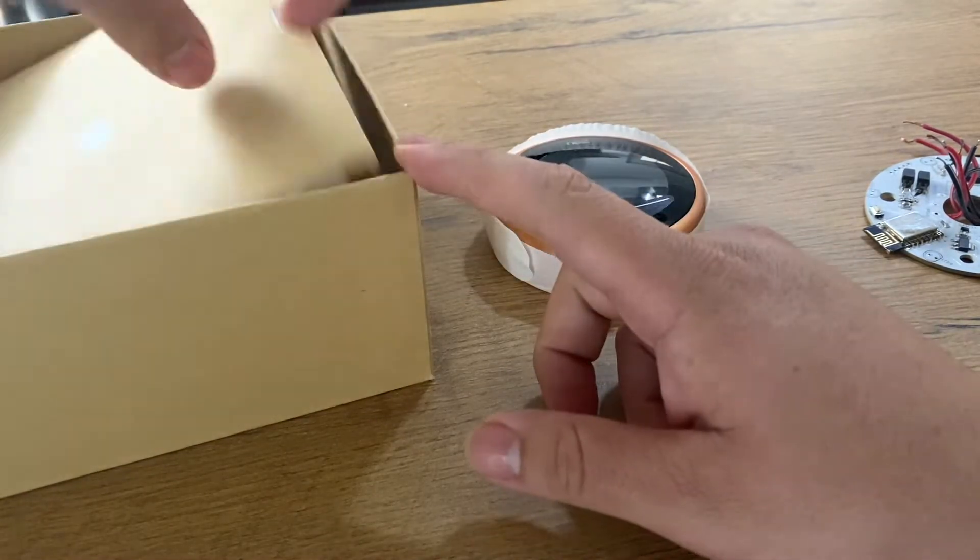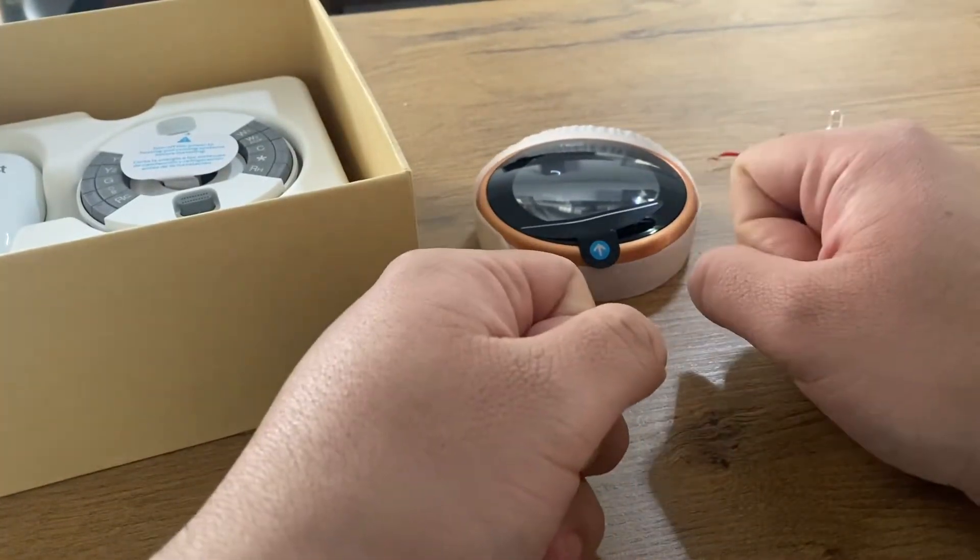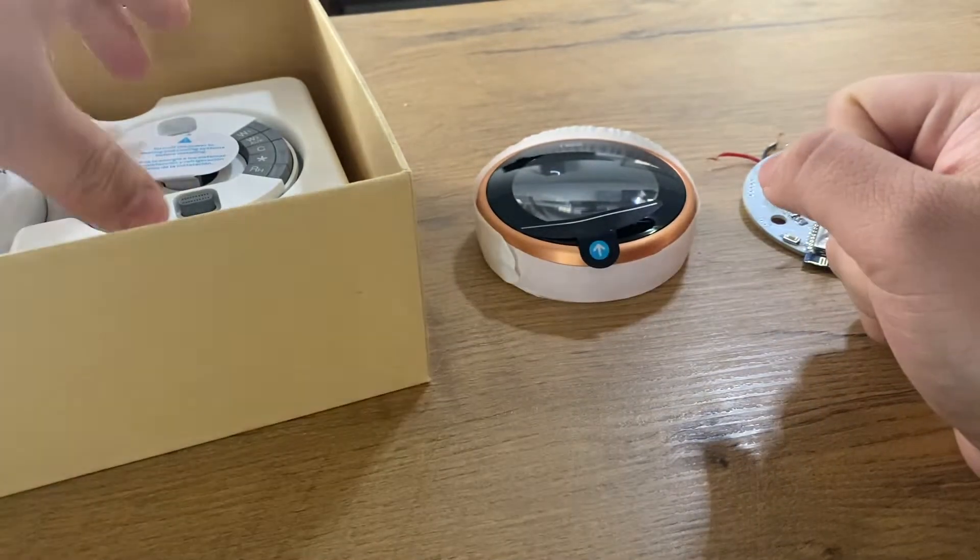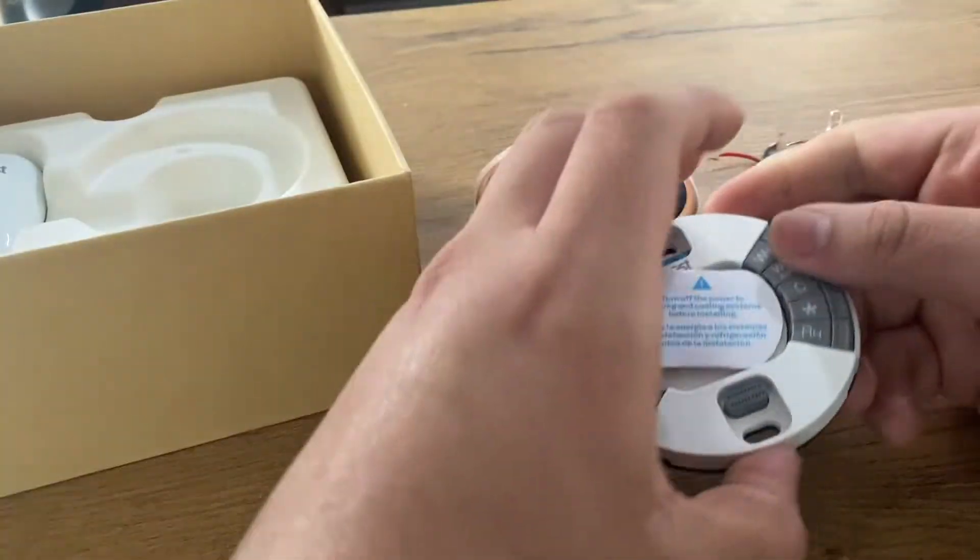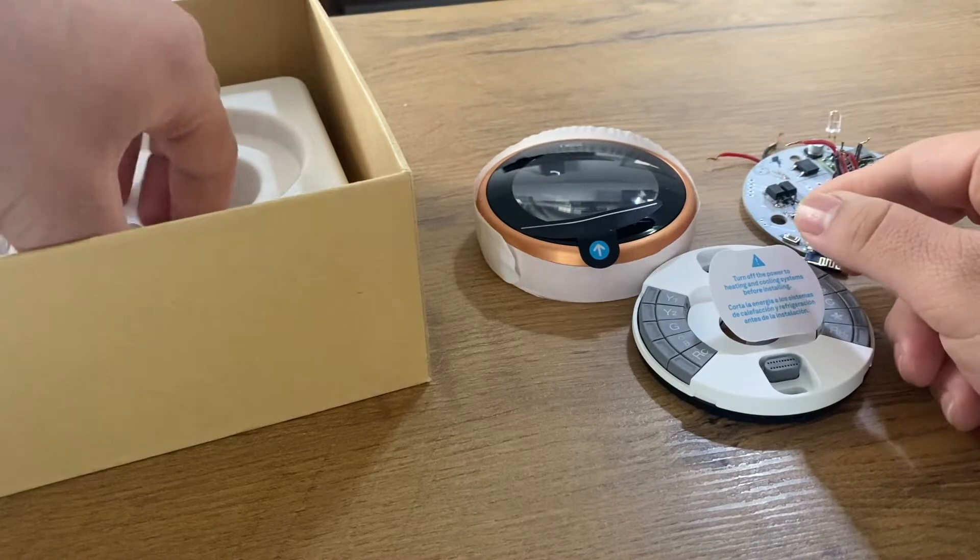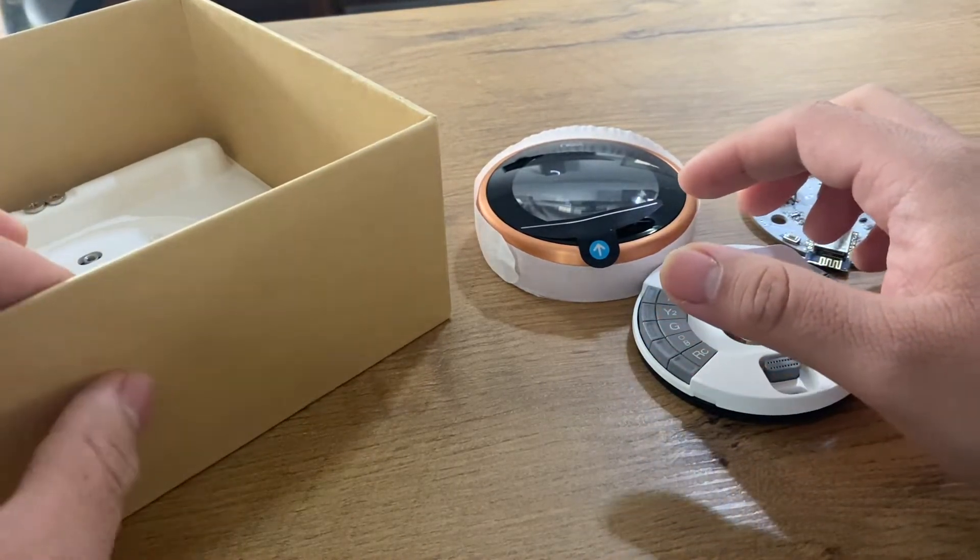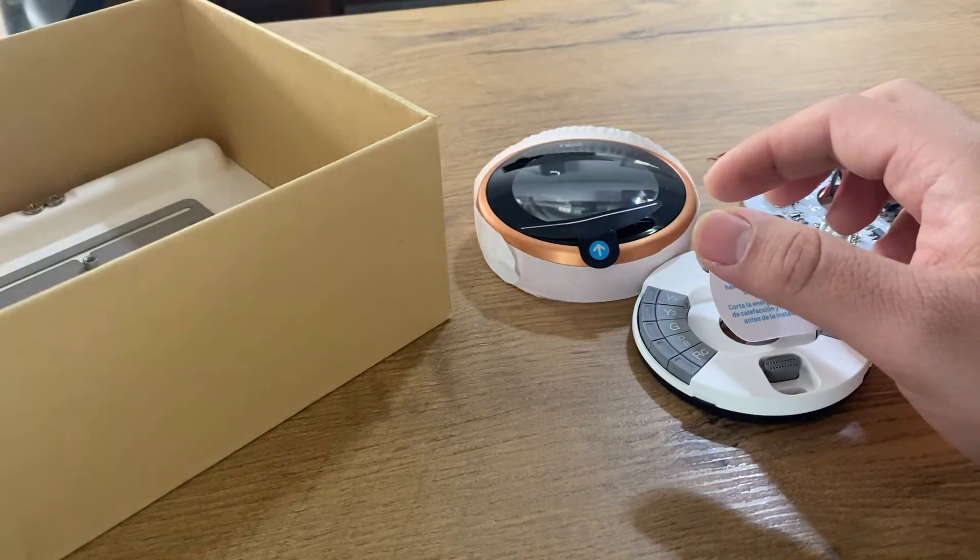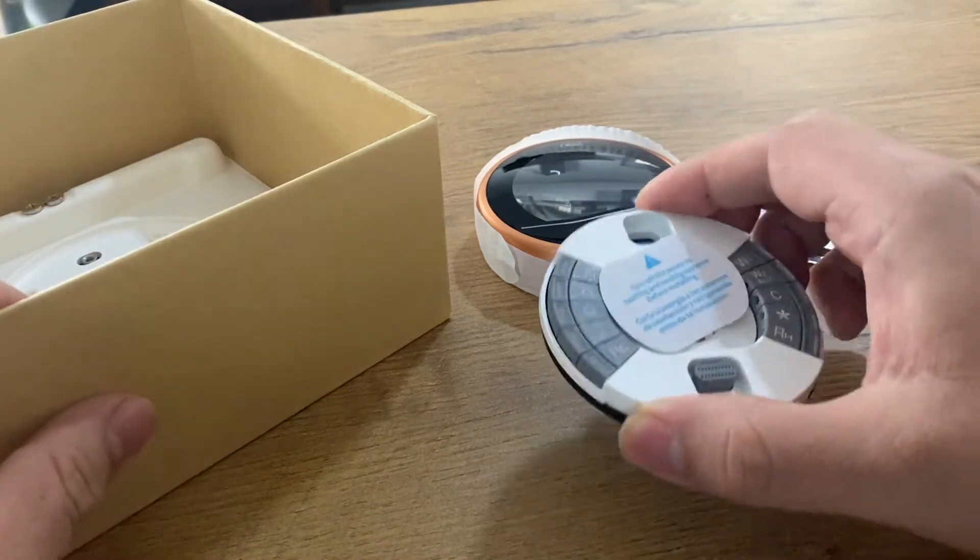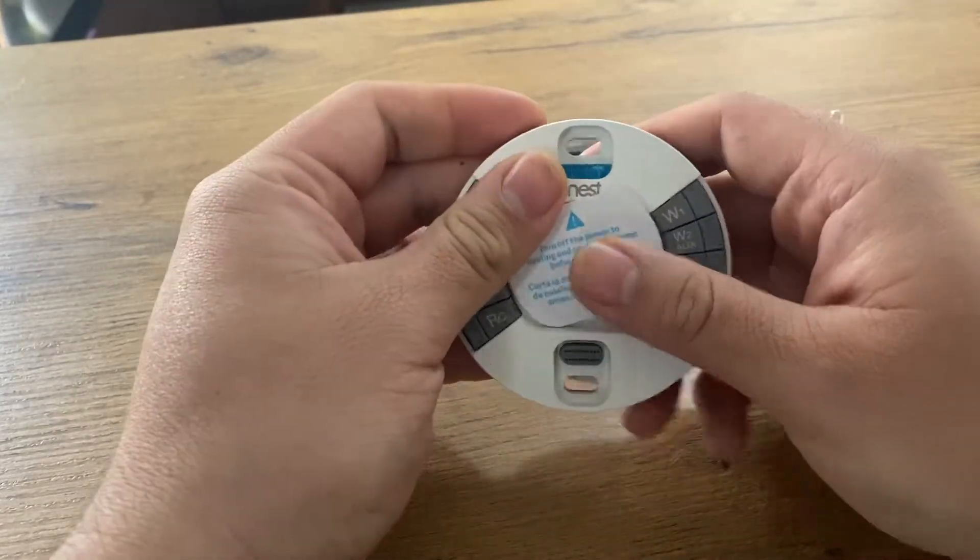And basically, in order to use the Nest thermostat along with the circle, we need to use all the accessories, the original accessories that come with the box. So we are going to be using, of course, the Nest thermostat, the back plate, which is the metallic one that comes in the box, the plastic back plate, and obviously the electronic back plate for connecting the Nest thermostat.